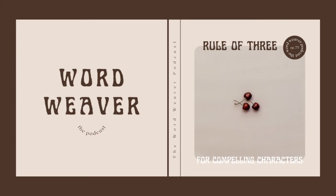Hello and welcome back to the WordWeaver podcast. I hope everyone is having a great day. On today's episode, I want to talk to you about the rule of three. Now, you might have heard of the rule of thirds when it comes to photography — it's a trick that photographers use to set up the frame — but the rule of three is something that comes up often in writing, and I want to talk about how you can incorporate it to write compelling characters and raise the stakes and tension in your novel.